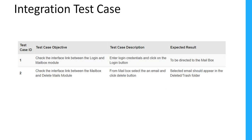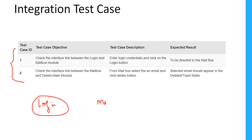Integration test cases differ from other test cases in that they focus mainly on the interfaces and flow of data between modules. Priority is given to integrating links rather than unit functions, which are already tested. For example, consider a scenario with three modules: a Login module, a Mailbox module, and a Delete Mails module — each integrated logically.